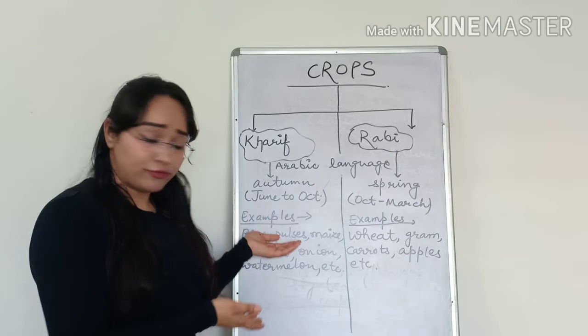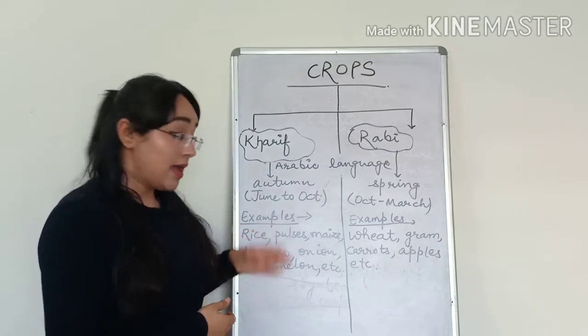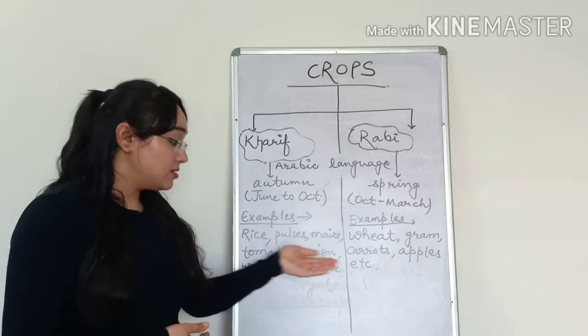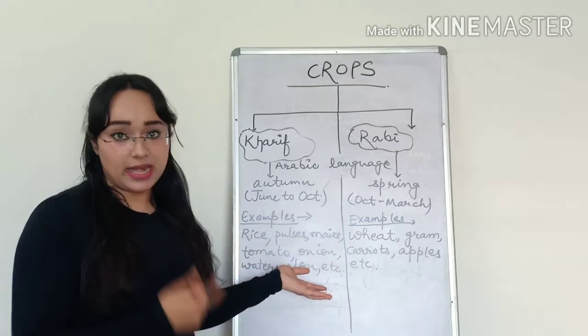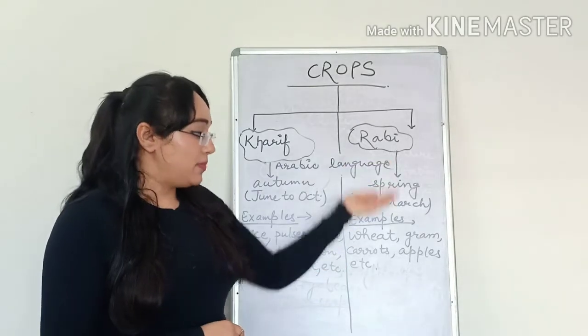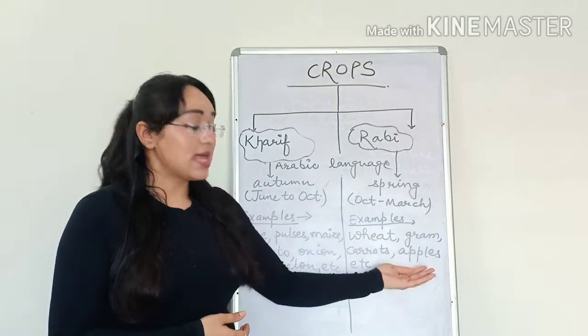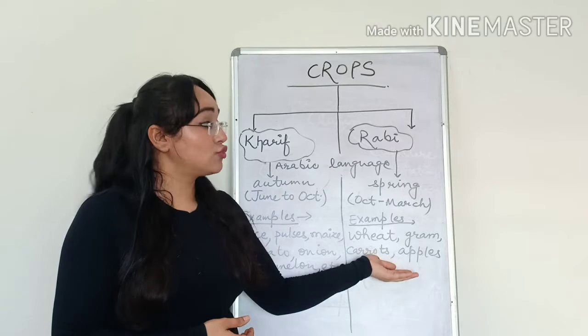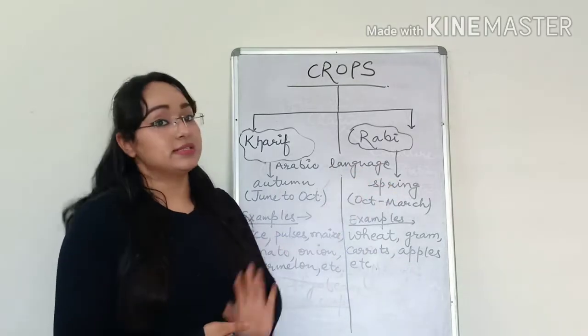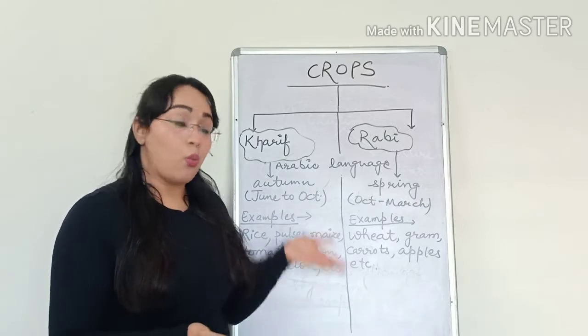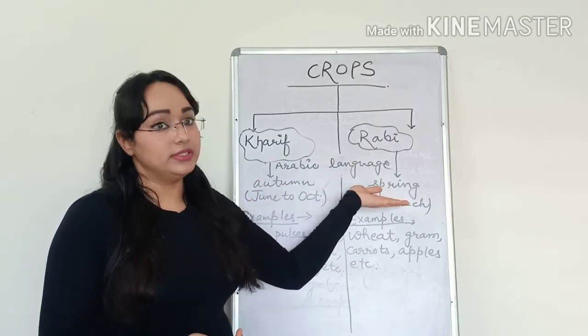Some examples of kharif crops are rice, pulses, maize, tomato, onion, watermelon, and many other crops. In rabi season, wheat, gram, carrots, apple, and many such crops are grown. So these two are mainly the crops grown, one in the summer season, the other in the winter season.